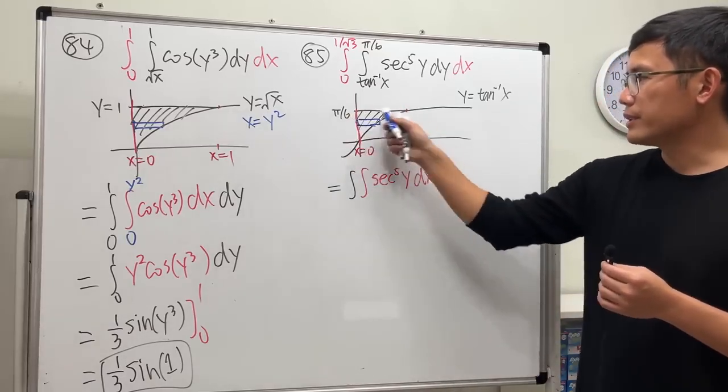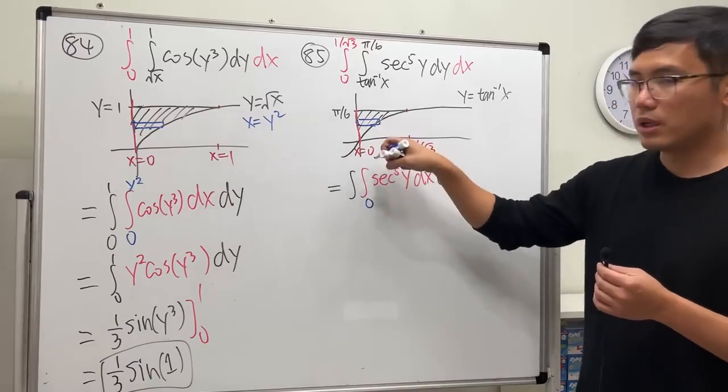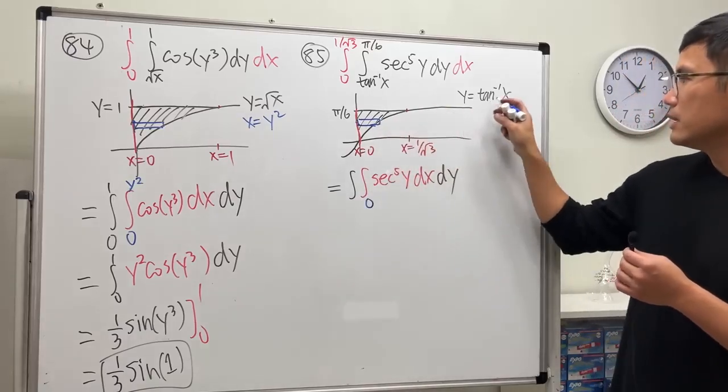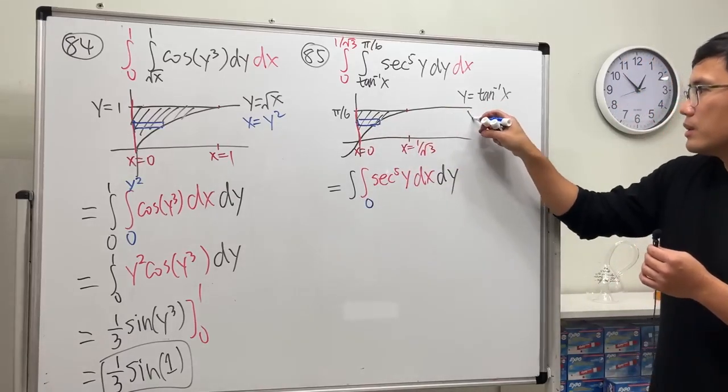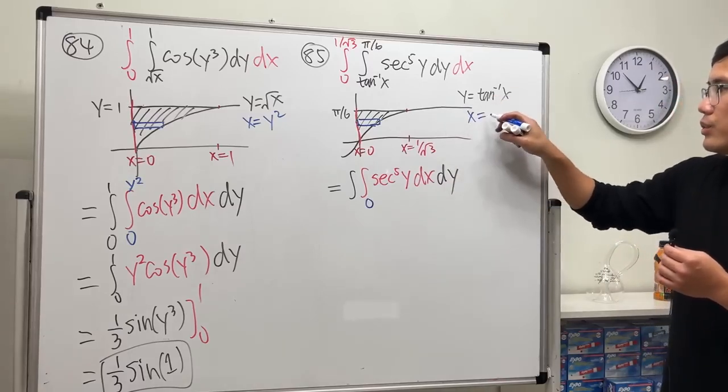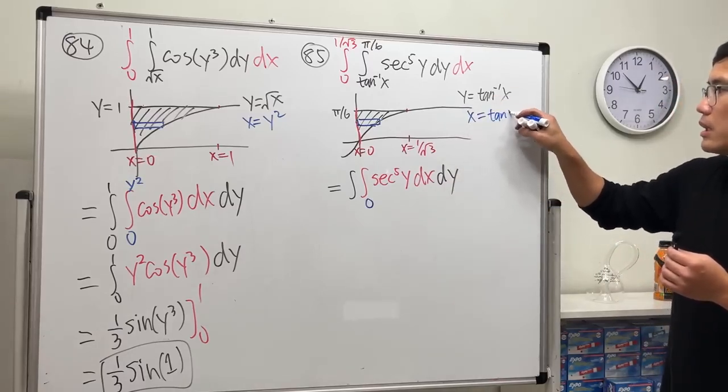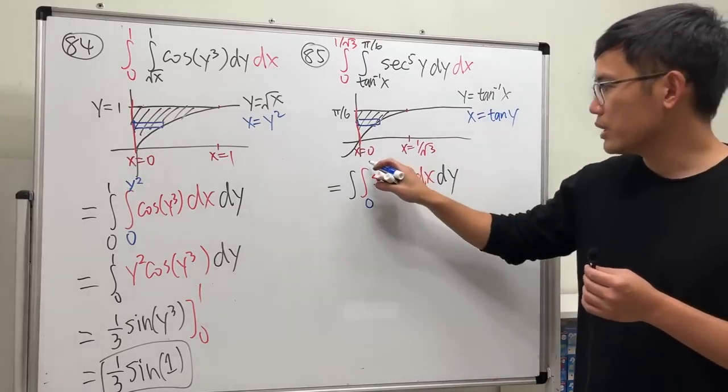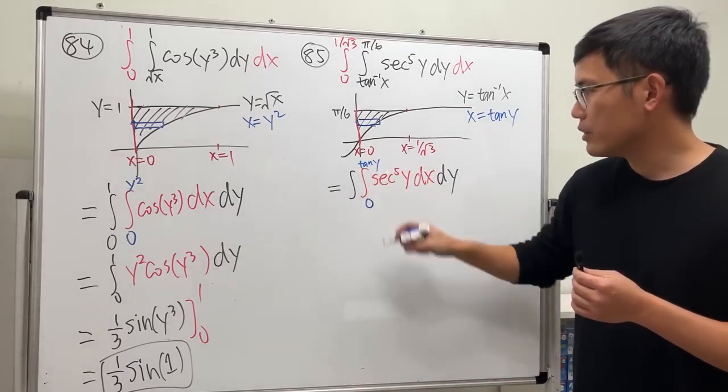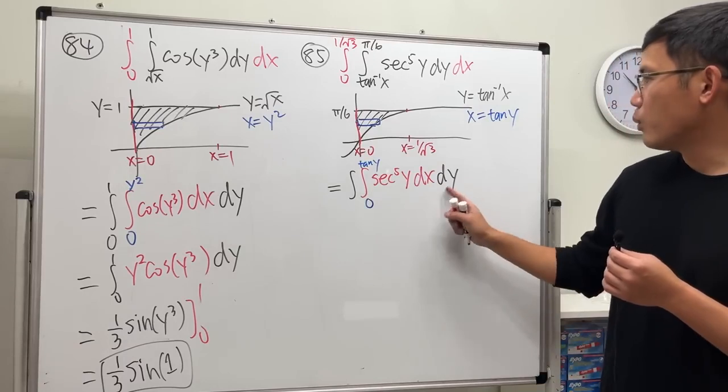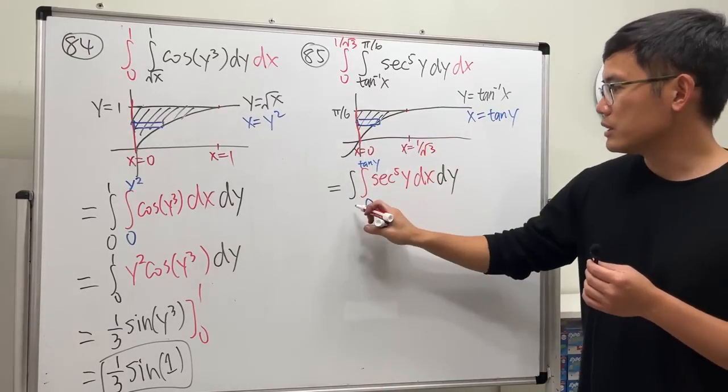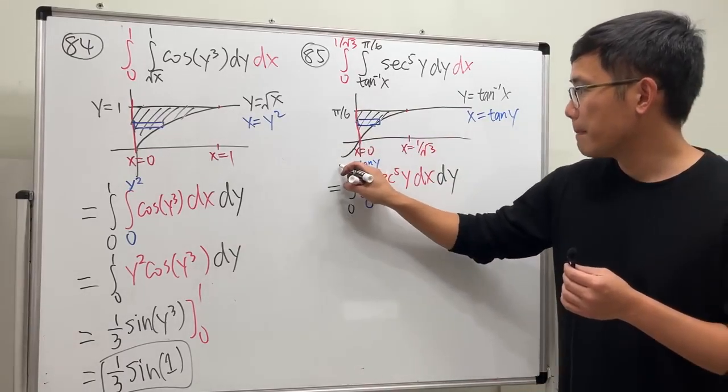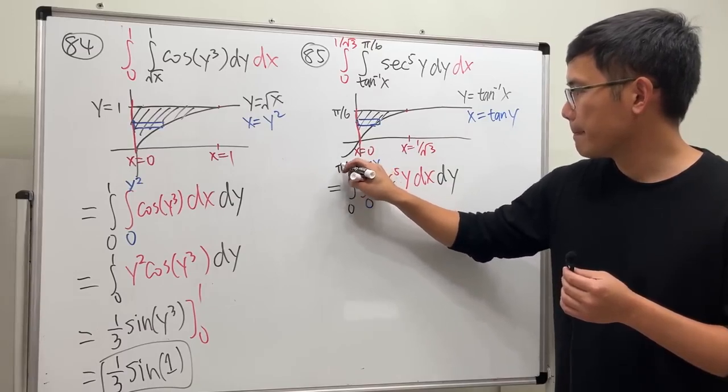So from left to right, horizontal rectangle starts with zero. This is this function, meaning just go ahead and do x equals tangent of y. So here we have tangent of y, and then y goes from here to here, so it's zero to π over six.